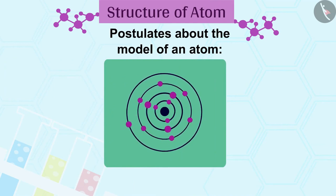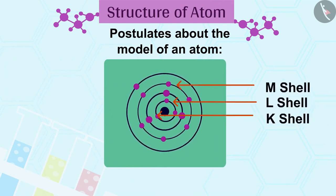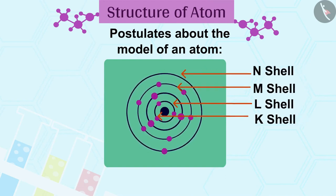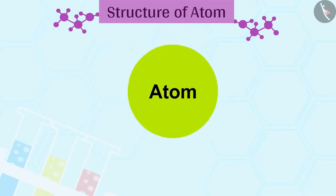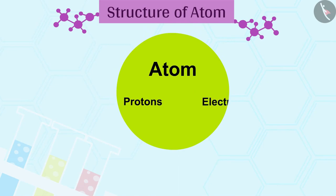These orbits or shells are represented by the letters K, L, M, N or the numbers N is equal to 1, 2, 3, 4 and so on. Do only protons and electrons exist in an atom?